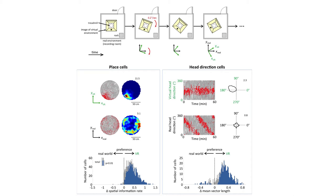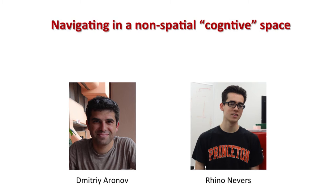Why was this important? It provided further evidence that animals were really locked into this kind of extremely unnatural virtual environment. We started thinking: if they're so engaged in virtual environments relative to real ones, could we exploit that engagement to probe more deeply what is represented in the hippocampus and entorhinal cortex? That led us to the main part of my talk — navigating in a non-spatial, so-called cognitive space.